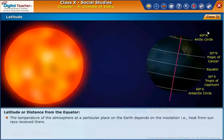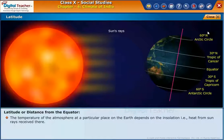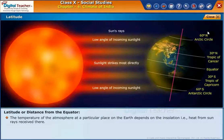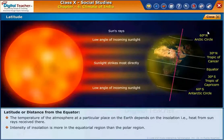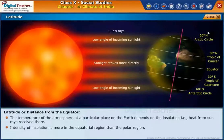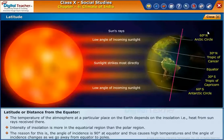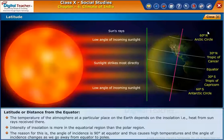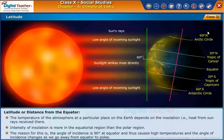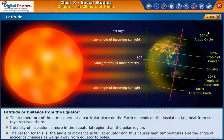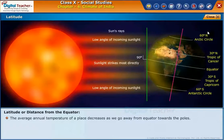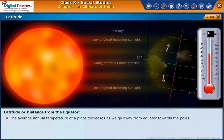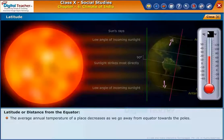The temperature of the atmosphere at a particular place on the earth depends on the insolation, that is, heat from sun rays received there. Intensity of insolation is more in the equatorial region than the polar region. The reason is that the angle of incidence is 90 degrees at the equator, causing high temperatures, and the angle of incidence changes as we go away from the equator to the poles. The average annual temperature of a place decreases as we go away from the equator towards the poles.